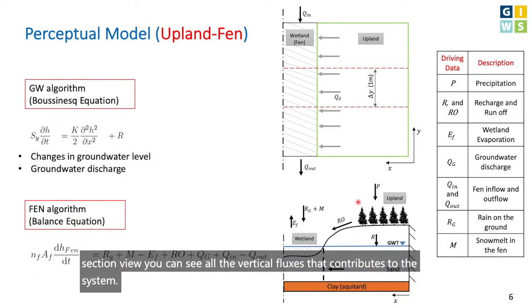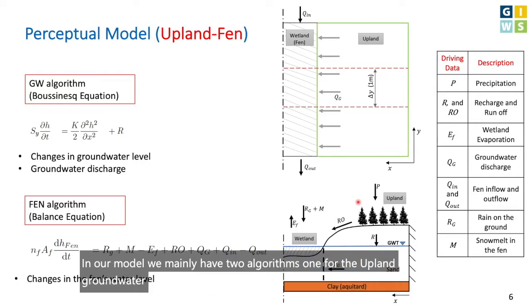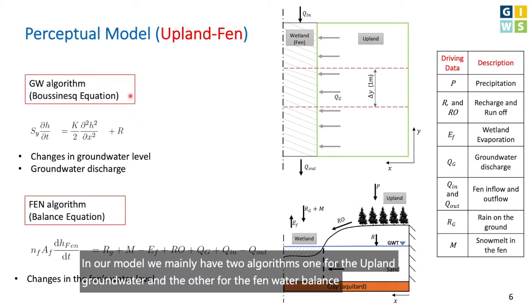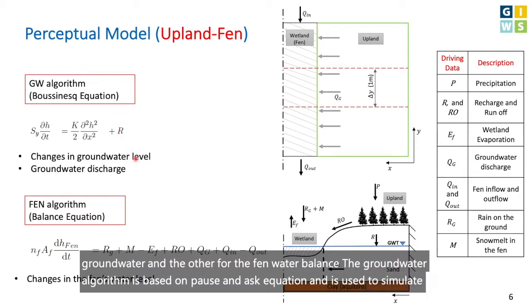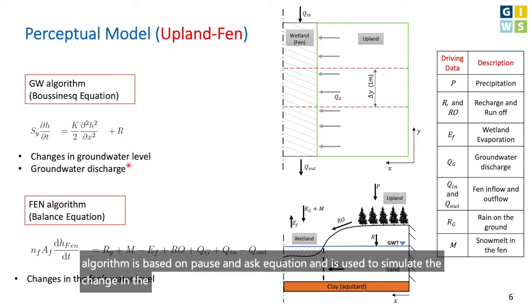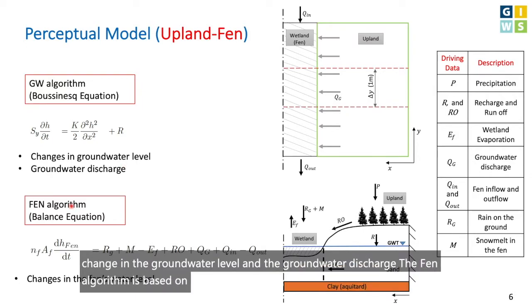In our model, we mainly have two algorithms: one for the upland groundwater and the other for the fen water balance. The groundwater algorithm is based on the Boussinesq equation and is used to simulate changes in the groundwater level and groundwater discharge. The fen algorithm is based on the water balance equation and is used to simulate changes in the fen water level.